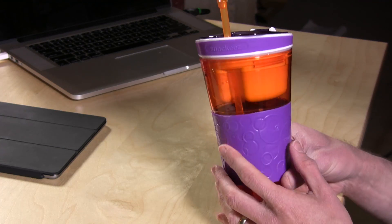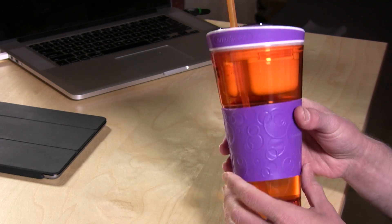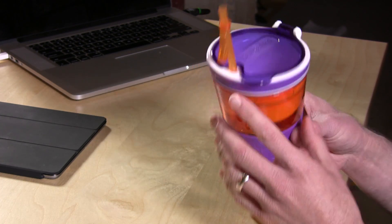This is the Snack-Ease and they sent this to the show to review. What this is is a cup that you drink out of, so it's got a straw on the end here.